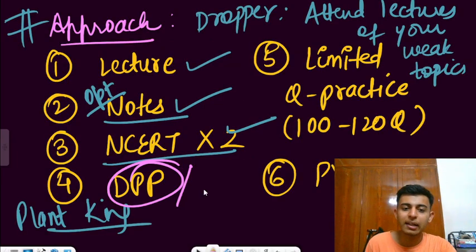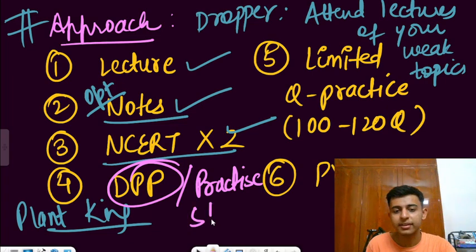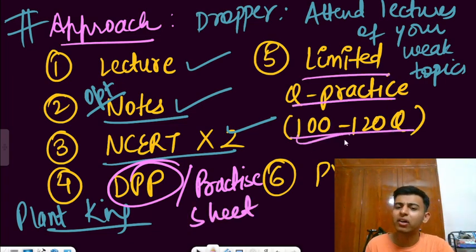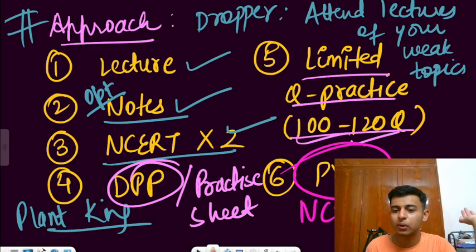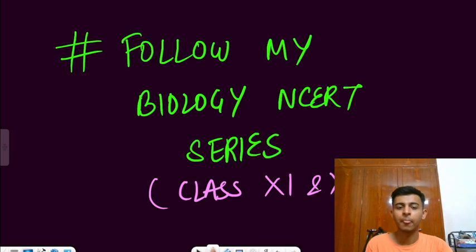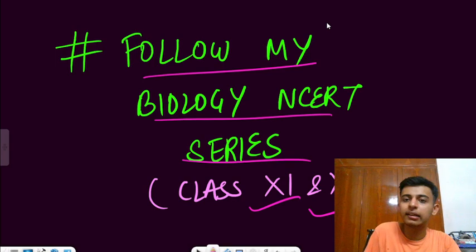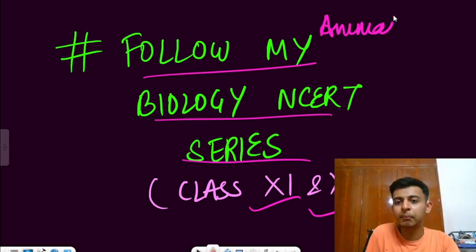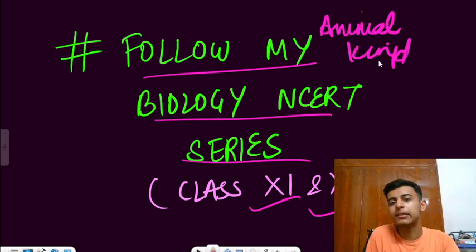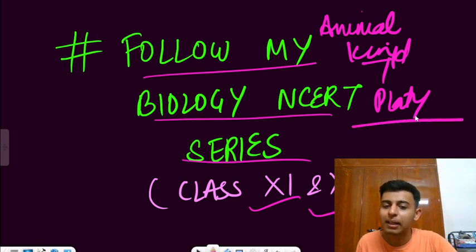After that, you're solving DPP or any practice sheet which is provided to you by your coaching institute. Then limited question practice is needed in bio. 100 to 120 MCQs for a chapter will be sufficient because bio is a theoretical subject. Again I should say, stick to the PYQs and NCERT-oriented MCQs that will only help. You can also follow my biology series for 11th and 12th NEET. I have already done animal kingdom till Platyhelminthes.